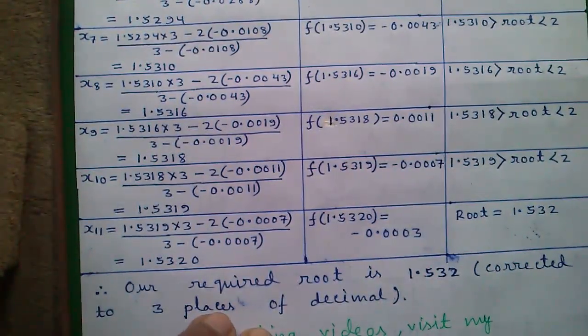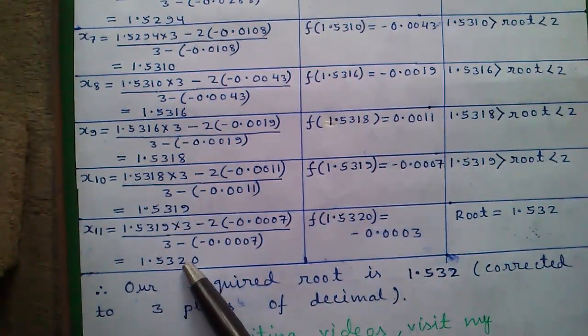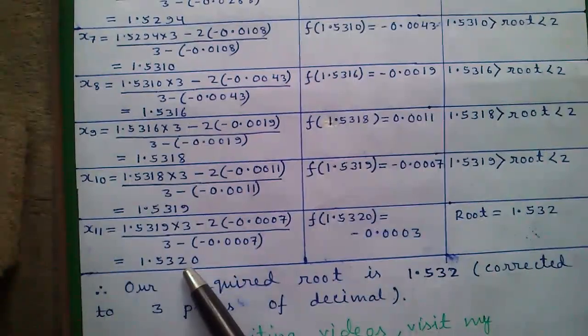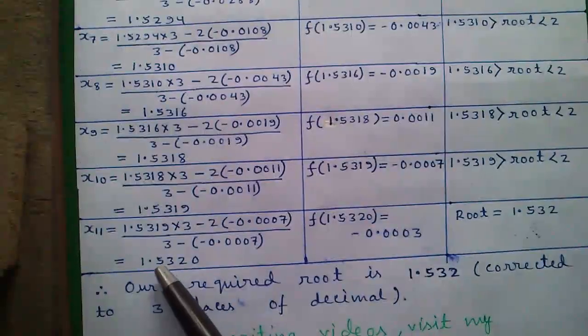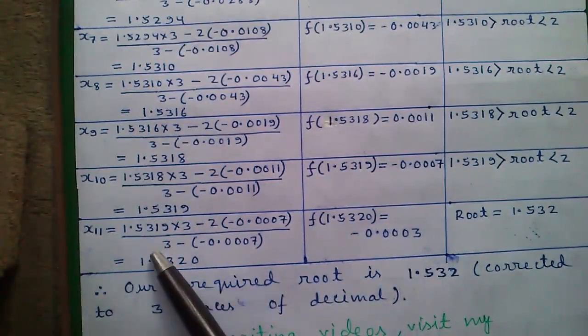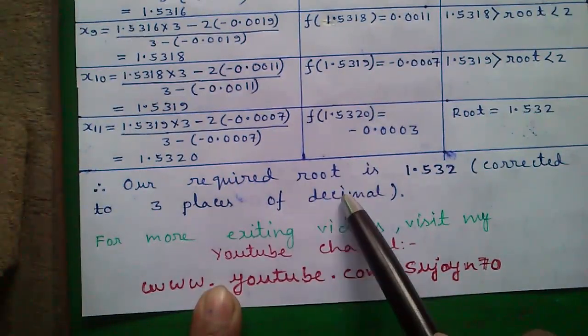Next question. When will we stop our calculation? We will stop our calculation when we will get our answer correct to our specified decimal places. Our specified decimal places is 3. So we have got our answer correct to 3 decimal places. 4th place is 0. So we can stop our calculation. This is our required root. Our required root is 1.532 corrected up to 3 places of decimal.